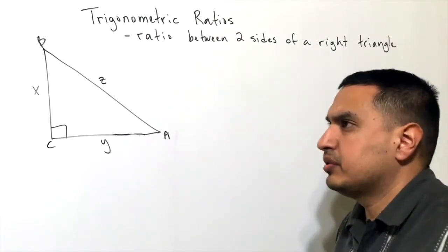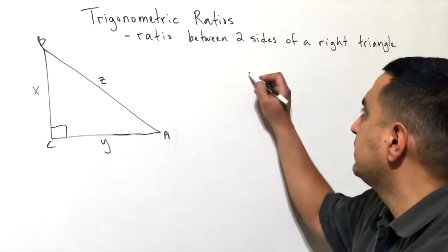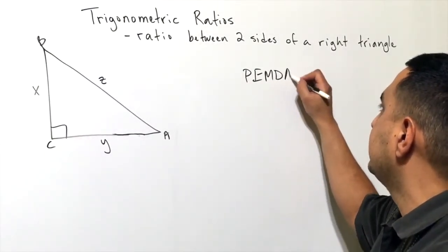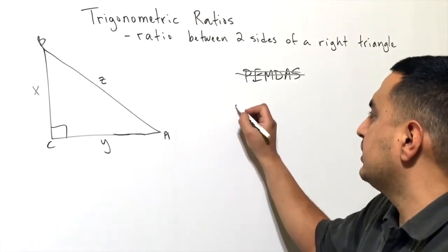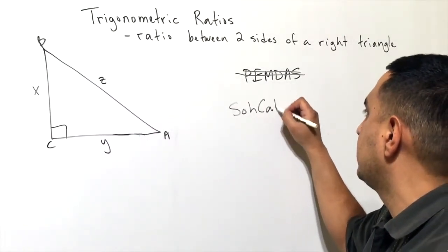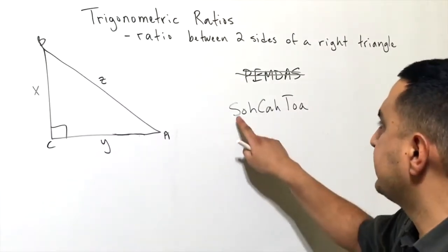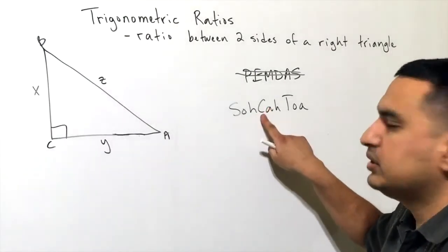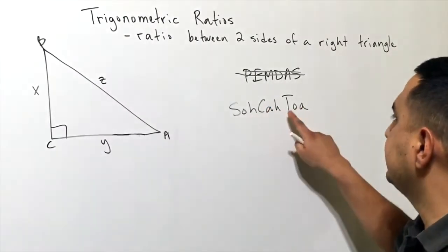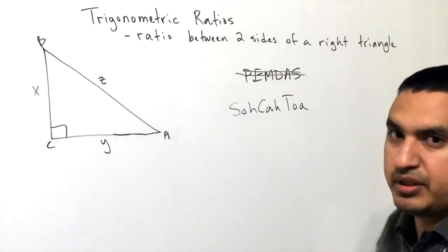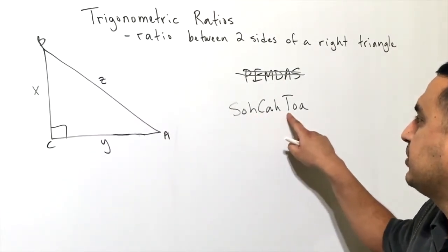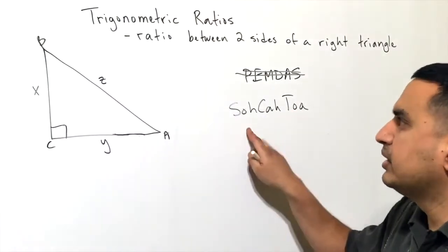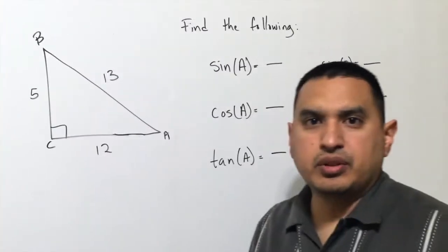A way to remember these trig functions is similar to PEMDAS. The mnemonic device for trig ratios is SOH-CAH-TOA: Sine is Opposite over Hypotenuse, Cosine is Adjacent over Hypotenuse, and Tangent is Opposite over Adjacent. Another saying is 'Some Old Hippie Caught Another Hippie Tripping On Acid' — just different ways to remember the differences between sine, cosine, and tangent.